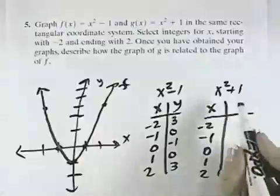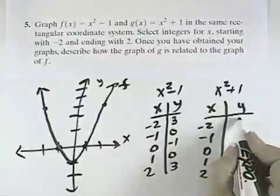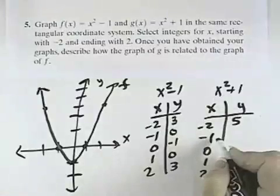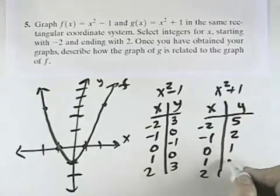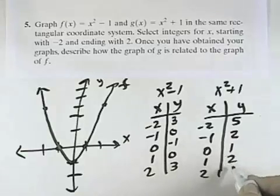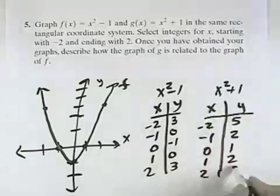For our graph of g, when x is negative 2 squared is 4, plus 1 is 5. Negative 1 squared is 1, plus 1 is 2. 0 squared is 0, plus 1 is 1. 1 squared is 1, plus 1 is 2. 2 squared is 4, plus 1 is 5.